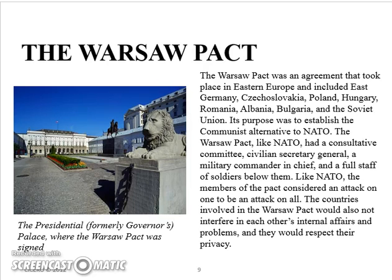On the other side was the Warsaw Pact, an agreement in Eastern Europe including East Germany, Czechoslovakia, Poland, Hungary, Romania, Albania, Bulgaria, and the Soviet Union. Its purpose was to establish the communist alternative to NATO. Like NATO, the Warsaw Pact considered an attack on one to be an attack on all, and members would not interfere in each other's internal affairs. The Warsaw Pact was an alliance of communist countries opposed to NATO. As a result, much of the world was split into two camps during the Cold War.